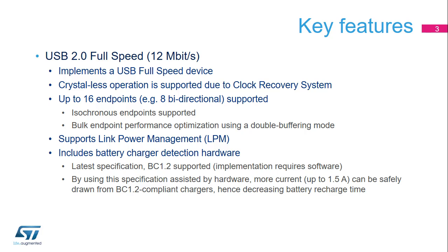Let's look at some of the key features of this USB Full-Speed Interface, which is a USB 2.0 compliant interface that operates at a 12 Mbit per second bitrate. A USB FS device can be implemented. Crystalless Operation is supported. A total of 16 endpoints, 8 bidirectional, can be supported, with full support for isochronous endpoints.